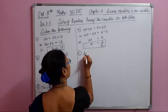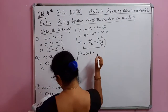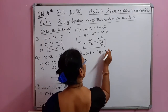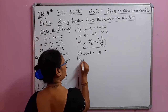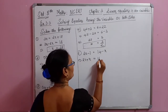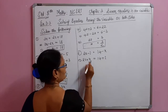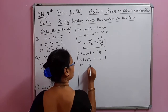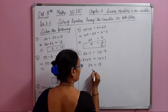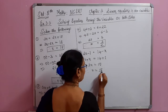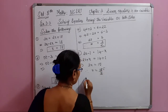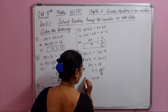The fifth problem is 2x minus 1 equals 14 minus x. The x comes to this side: 2x plus x equals 14 plus 1. So 3x equals 15, therefore x equals 15 divided by 3, which is 5.